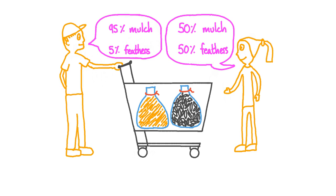Which friend is correct? Well, they both are. These friends are calculating the percentage concentration of the shopping cart. The first friend is calculating the percentage by volume. The second friend is calculating the percentage concentration by mass.